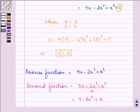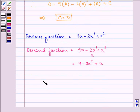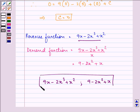The required answer is: first, the total revenue function is 9x - 2x³ + x². And then the demand function is 9 - 2x² + x. These are the answers to the given question.